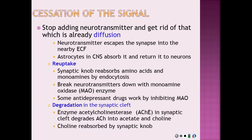With diffusion, the neurotransmitter leaves the synapse and enters the extracellular fluid. In the central nervous system, astrocytes absorb it and return it to the neurons. With reuptake, the synaptic knob reabsorbs amino acids and monoamines by endocytosis and breaks them down with monoamine oxidase, an enzyme. With degradation, the enzyme acetylcholinesterase breaks down acetylcholine into acetate and choline, and the choline is reabsorbed by the synaptic knob.